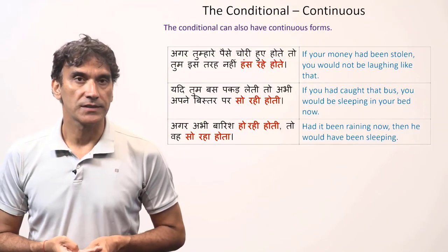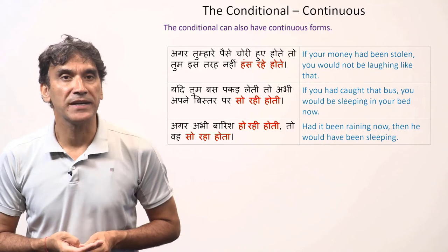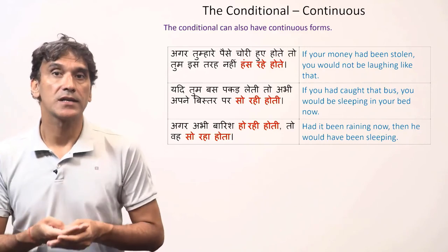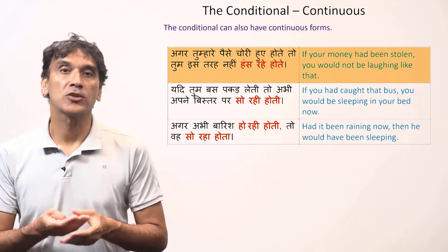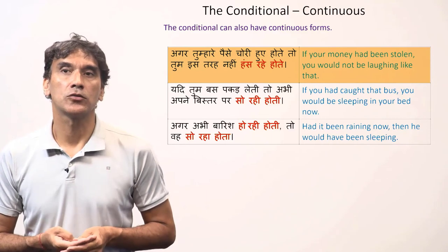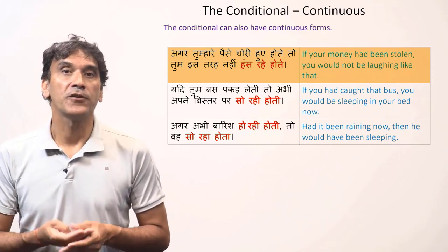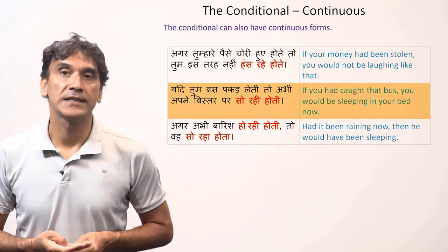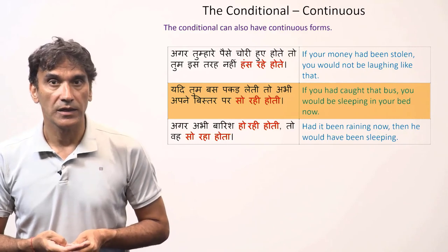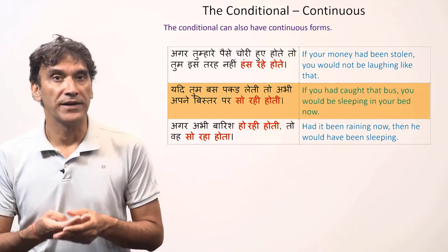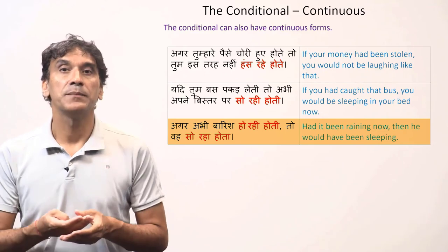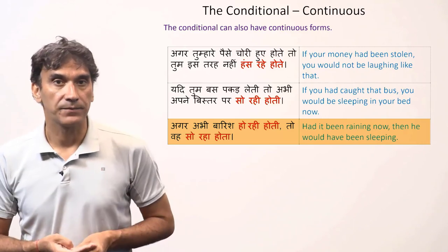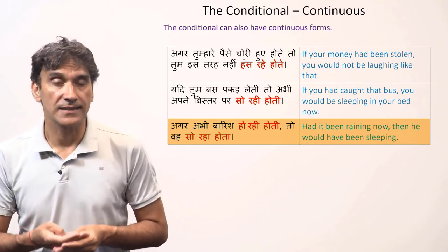Now the conditional continuous. The conditional continuous is made with the continuous participle and the habitual participle form of the helping verb hona. Examples: if your money had been stolen, you would not be laughing like that; if you had caught the bus, you would be sleeping in your bed now. Had it been raining now, he would have been sleeping — in this last sentence, both the if clause and the then clause are in the continuous.